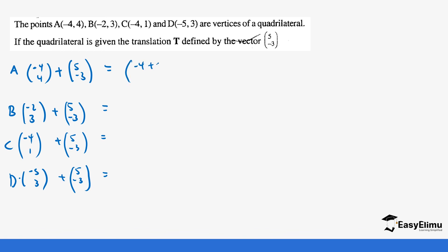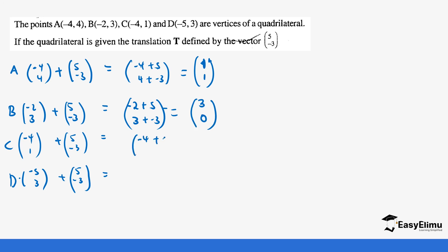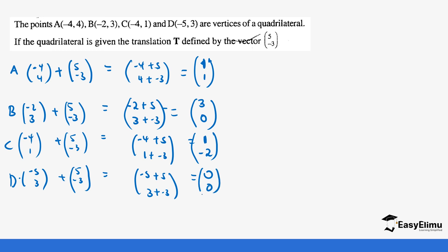For A prime: negative 4 plus 5 equals positive 1, and 4 plus negative 3 equals 1 — be careful with the negatives. So A prime is (1, 1). For B prime: negative 2 plus 5 equals 3, and 3 plus negative 3 equals 0. So B prime is (3, 0).